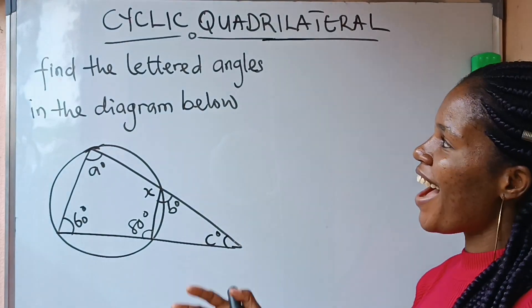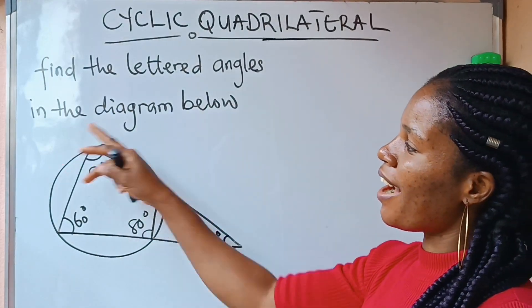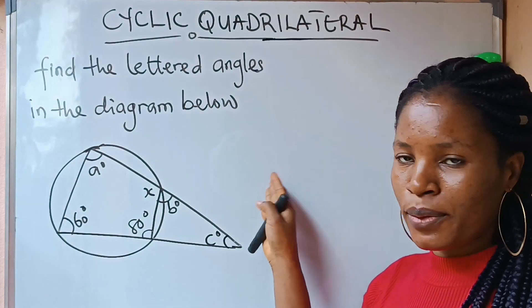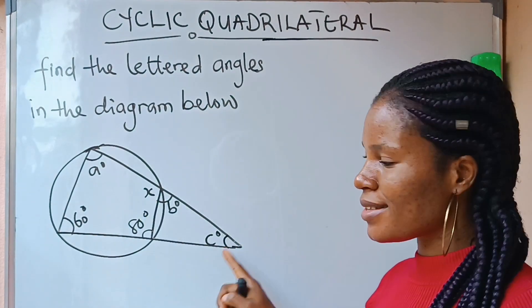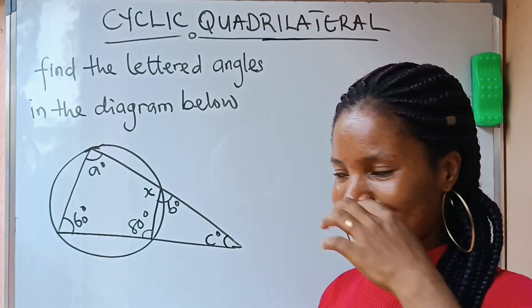Hi everybody, we are asked to find the lettered angles in the diagram below. Now we are asked to find angle A, X, B and C. Let's get into it.